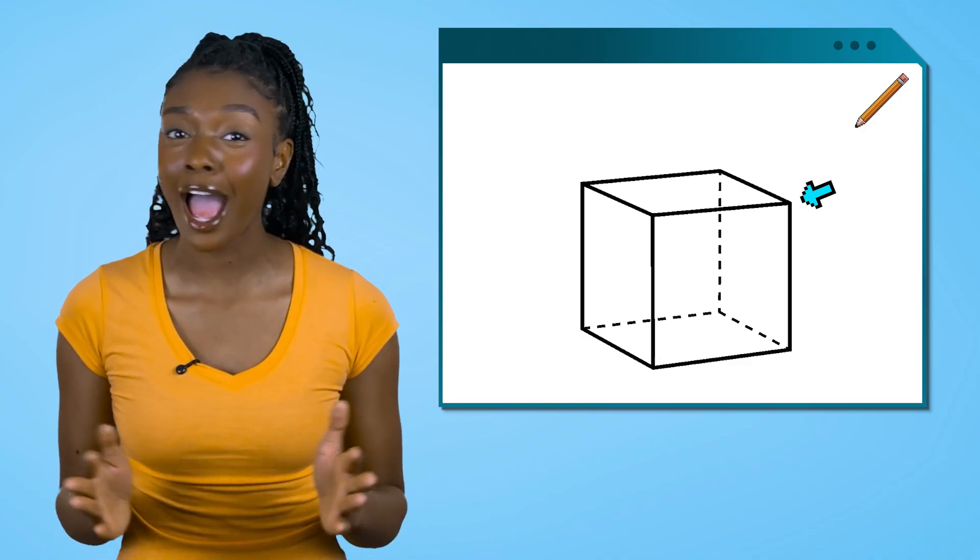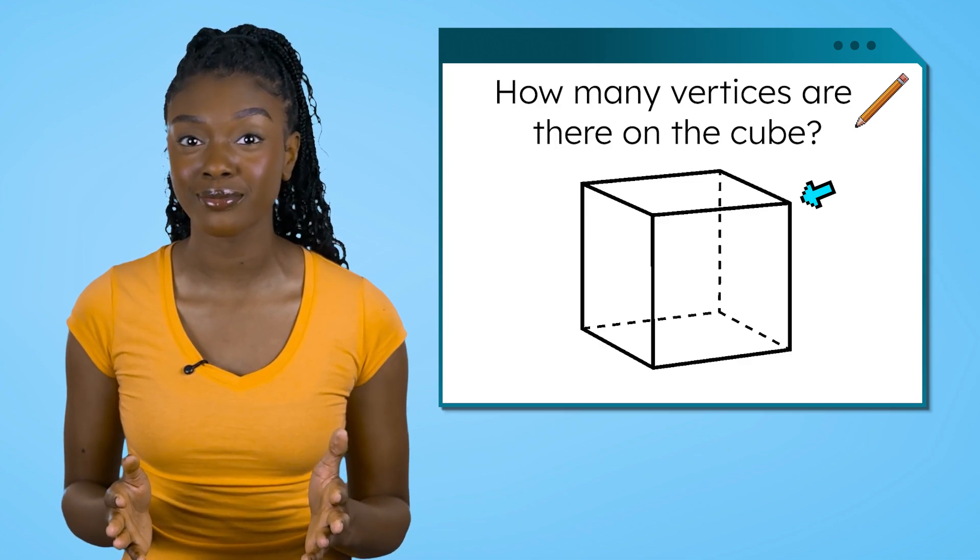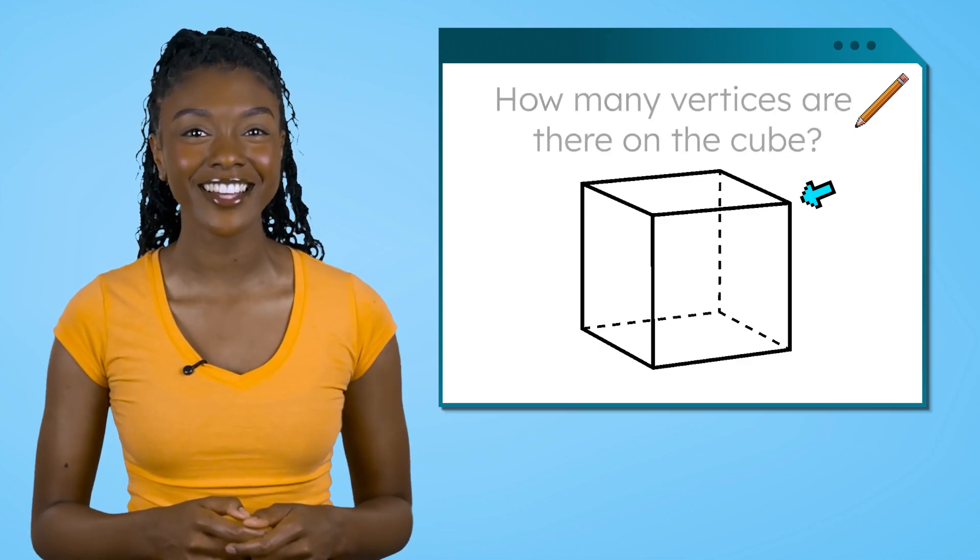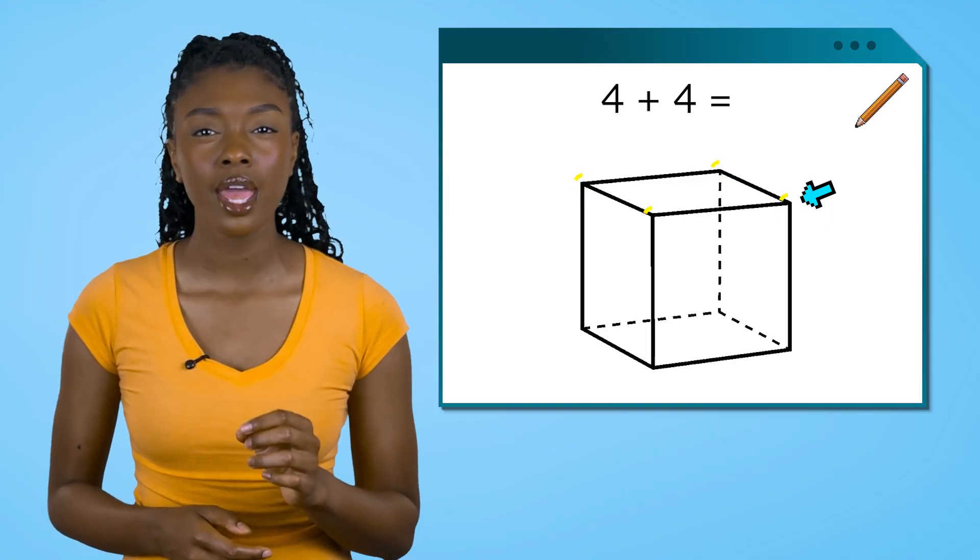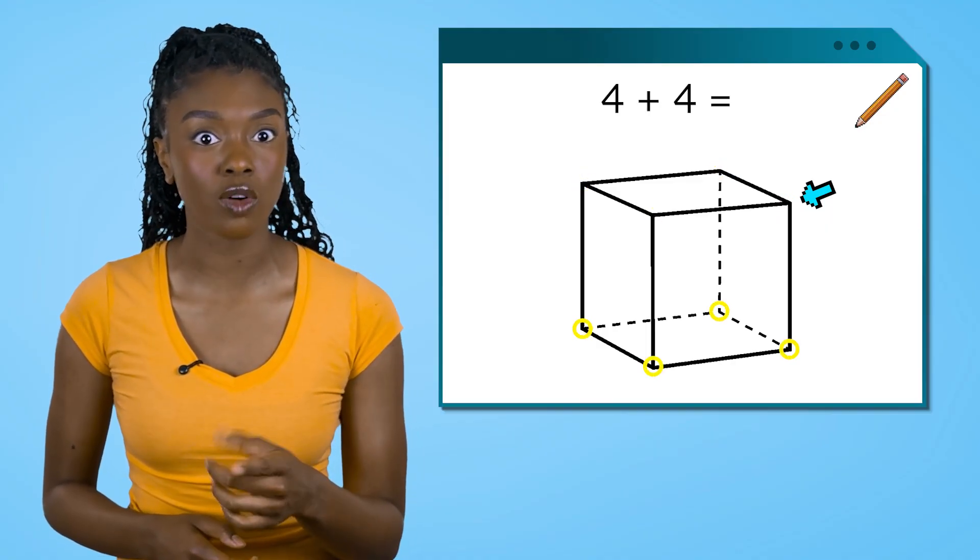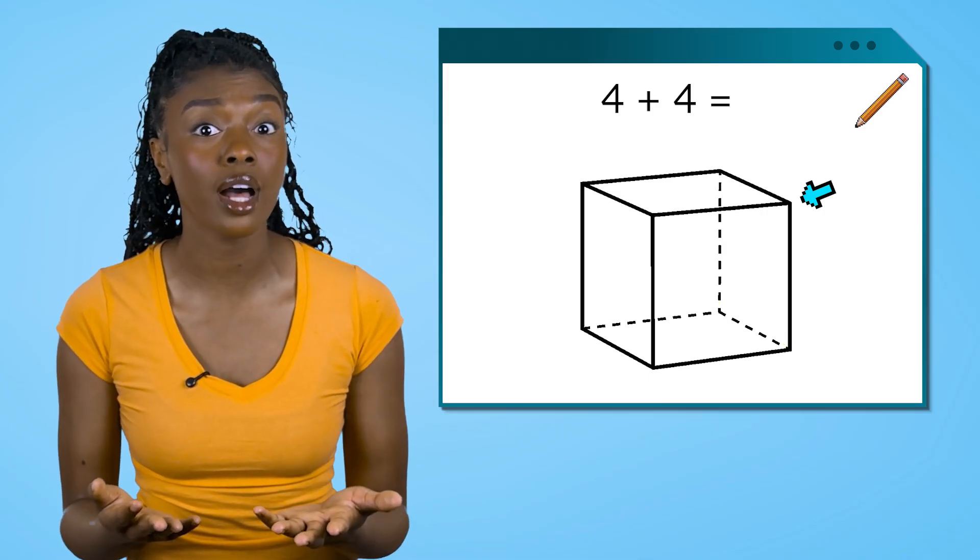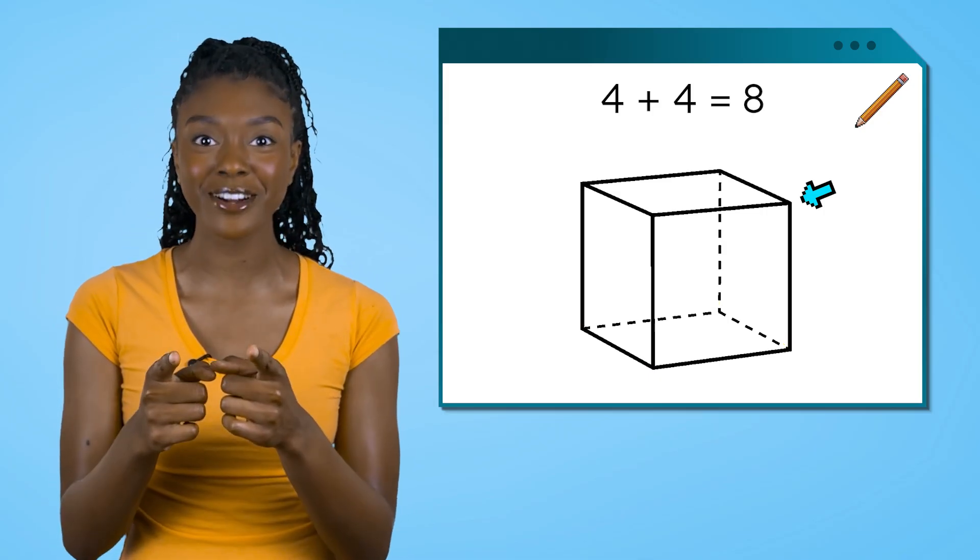So, how many vertices are there on the cube? Count with me. There are 4 vertices around the top of the shape and 4 more vertices around the bottom of the shape.